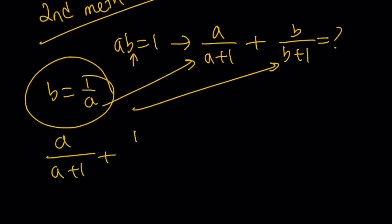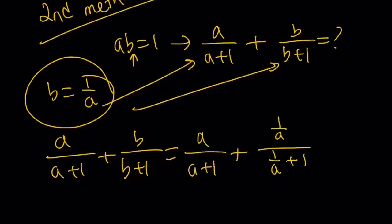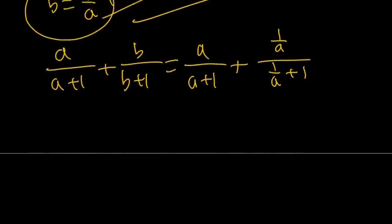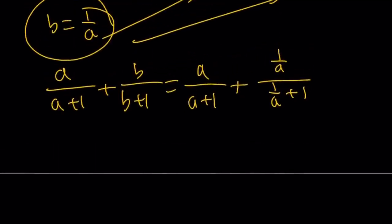a over a plus 1 plus b over b plus 1 equals a over a plus 1. And I'm going to replace b with 1 over a here and here. Make sense? Replace b with 1 over a. Substitution. Remember, that's a very powerful method. And then after that, it's just basic algebra or arithmetic, whatever you want to call that.